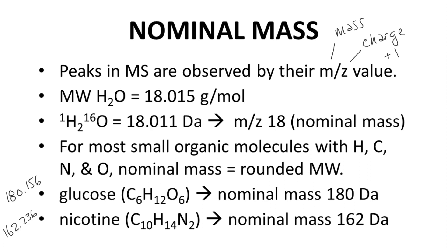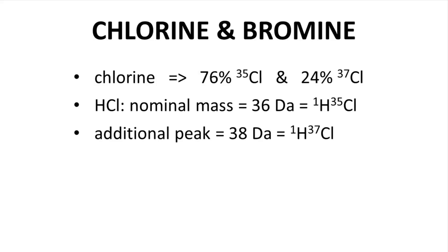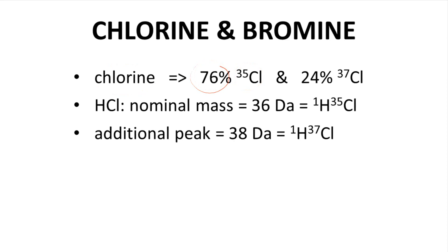There are two common atoms that break this trend: chlorine and bromine. A key issue with chlorine is that it has two relatively abundant isotopes — chlorine-35 at 76% abundance and chlorine-37 at 24% abundance.